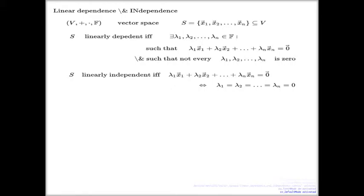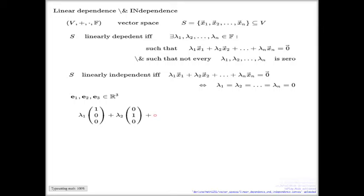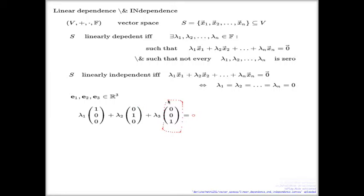I'll show you one example just to show this connection. One simple example - these are a canonical choice. This is e1, e2, e3 - it's a fixed standard notation for three vectors in R3 of this structure. So e1 is a vector like this, e2 is a vector like this, e3 is a vector like this. This is a fixed notation for this set of vectors e1, e2, and e3.